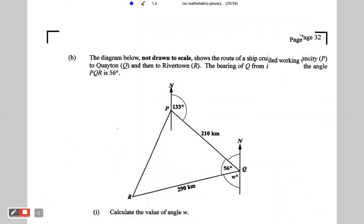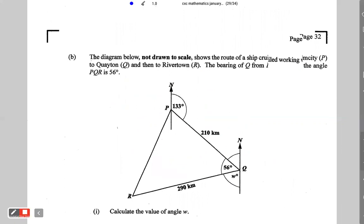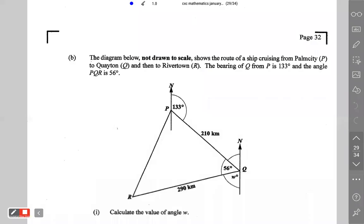So this part of the question, the B part, says the diagram below, not drawn to scale, shows the route of a ship cruising from Palm City P to Quayton Q and then to Riverton R. The bearing of Q from P is 133 degrees and the angle PQR is 56 degrees. We're to calculate the value of W.